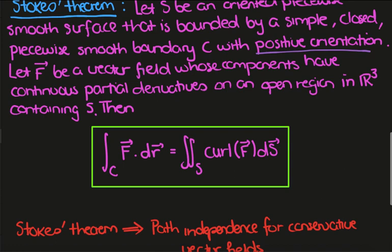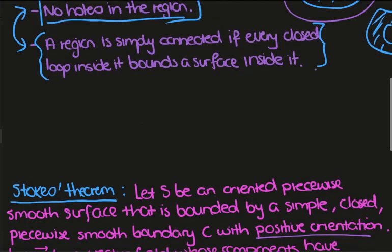And then we'll let F be a vector field whose components have continuous partial derivatives on an open region in R3 containing S. So remember, S is a surface, so it looks maybe something like this.